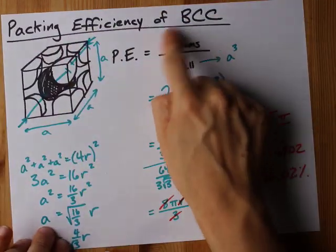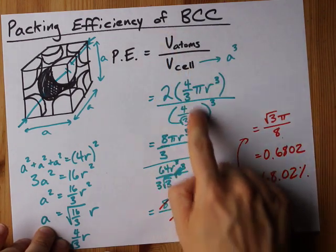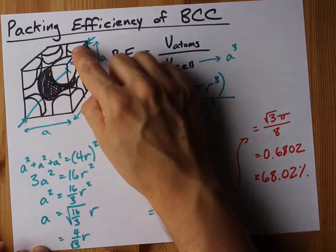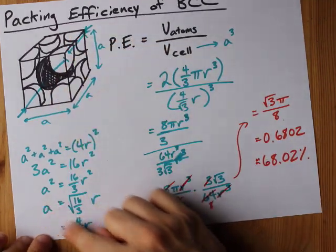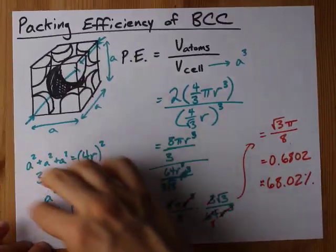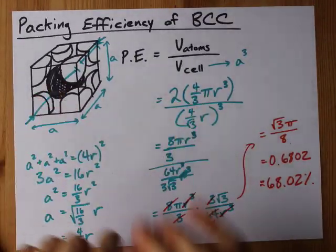Packing efficiency is all about getting the volume of the atoms, that's going to be based off the volume of sphere, and the volume of the cell, which you're going to have to base off of edge length. Some teachers will give you that the edge length is four over root three r for body centered cubic, but I want you personally to be able to derive it yourself.